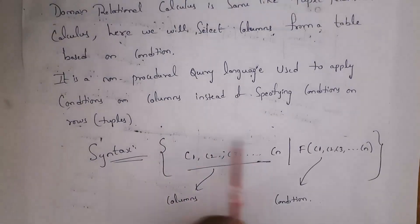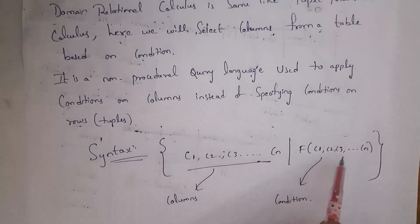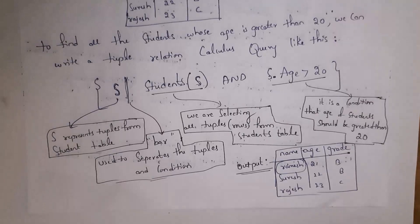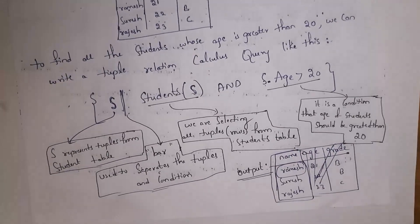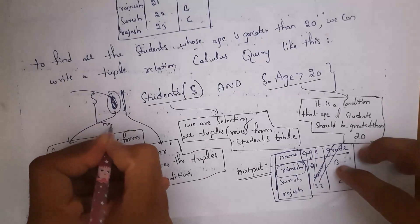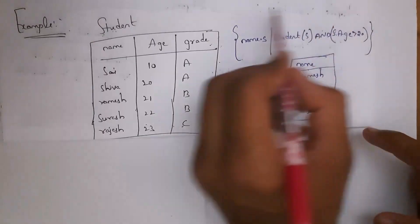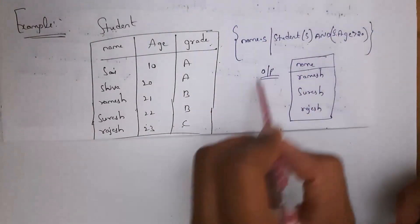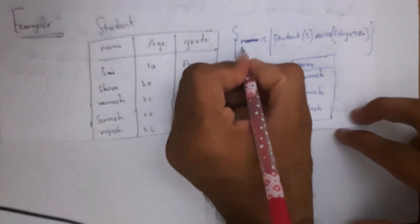Inside curly braces you need to select columns and give a condition for those columns. So c1, c2, c3, ..., cn are columns and f(c1, c2, c3, ..., cn) is the condition. Using the same example — I don't want to select the complete record, just I want to select the name column of students whose age is greater than 20. So instead of writing S, you write name.S, meaning I want to select only the name column. This is the domain relational calculus query and this is my output. For example, if I want to select only the grade column, just replace name with grade.